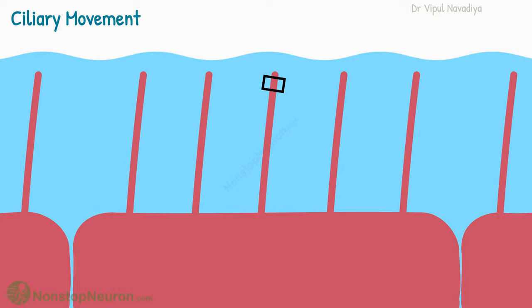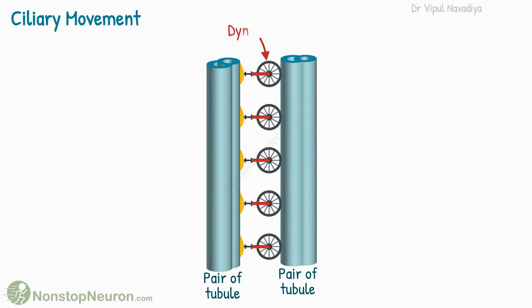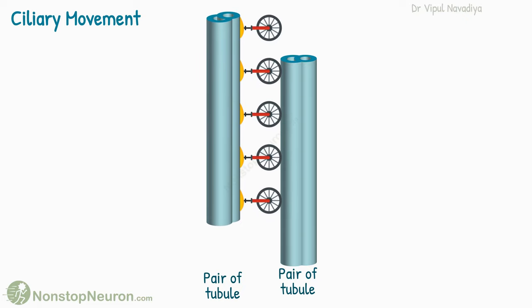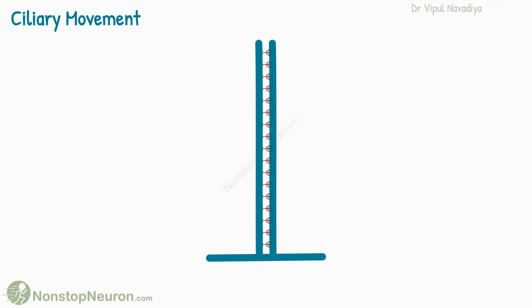Now let's see how this movement is produced at the molecular level. Adjacent peripheral pairs of tubules are connected to one another by dynein arms, and these arms act like molecular motors. At one end, the arm remains fixed, and the other end crawls over the microtubule. Thus, at the molecular level, one pair of microtubules slides over the other. Let's zoom out and see what effect this sliding produces at the ciliary level.